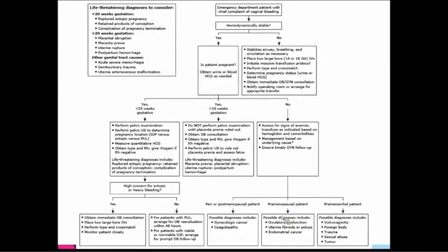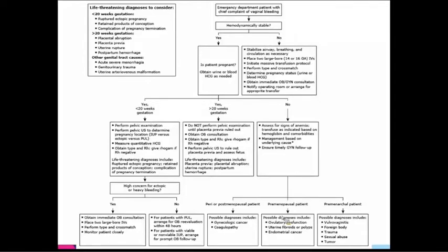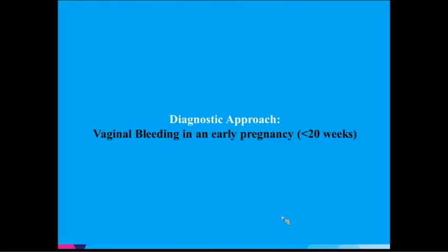There's an algorithm used more often in the emergency room setting. Looking at the top: is she stable or not? If not, the whole right-hand side goes to the ER. If she's stable, is she pregnant? And is she less than or more than 20 weeks? I'm going to be spending most of this talk on vaginal bleeding less than 20 weeks — that's probably where they're most likely to come to you in your practice.